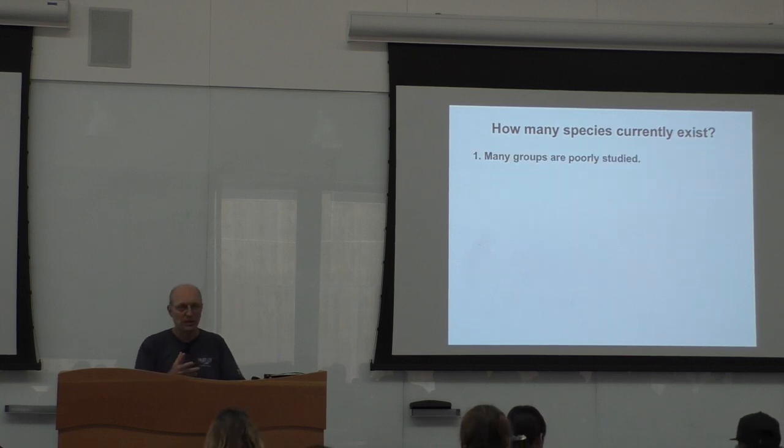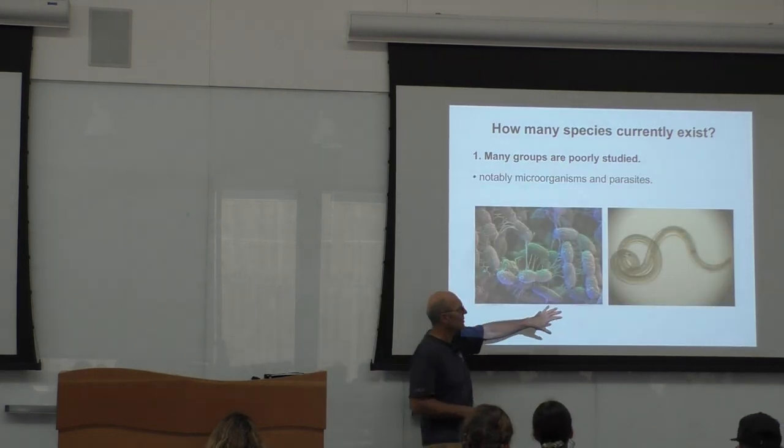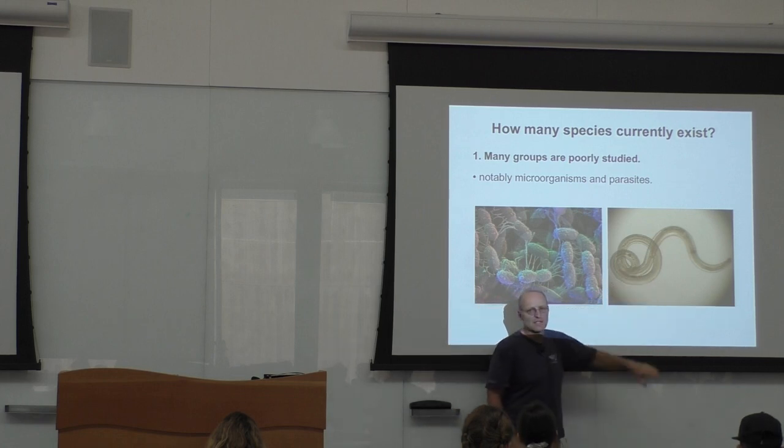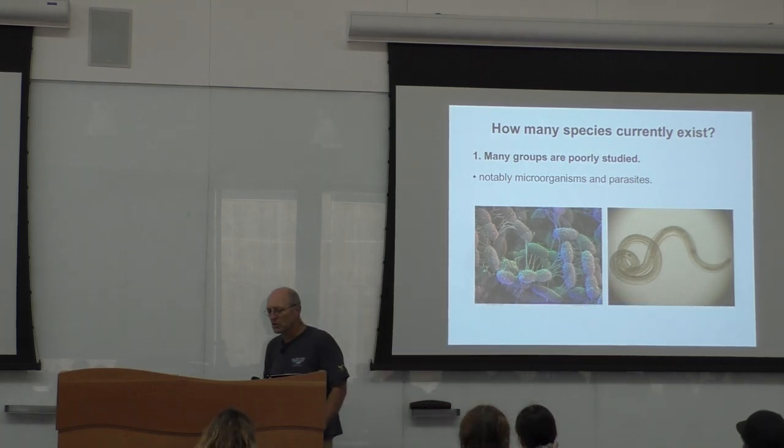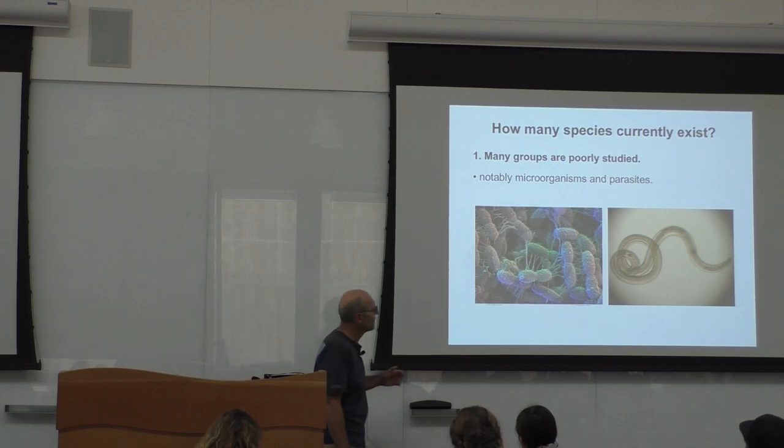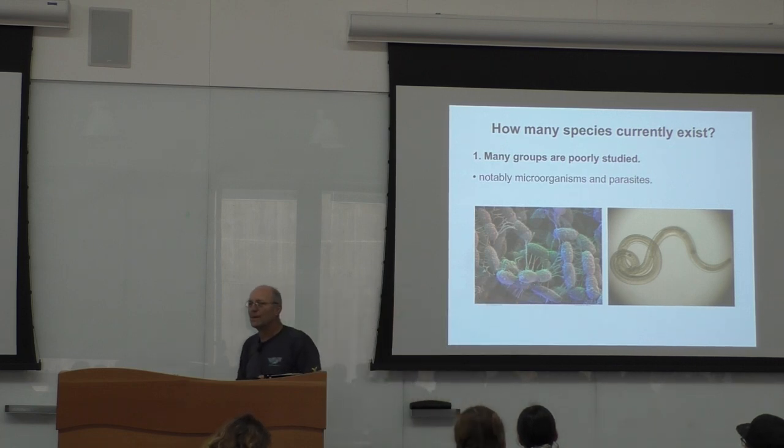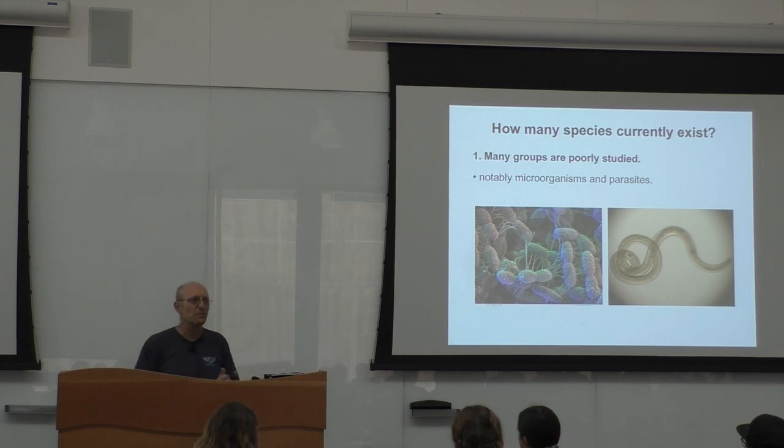So why is it uncertain? Well, there are two things that contribute to that. One is that a number of groups are poorly studied. In some respect, parasites, since pretty much everything that exists has parasites. So you just can count whatever species there are and you multiply that at least two. And another thing is microorganisms, which we have really no idea. I mean, one order or two, three orders of magnitude in unknown of microorganisms would be completely reasonable. We really have no idea what's going on.